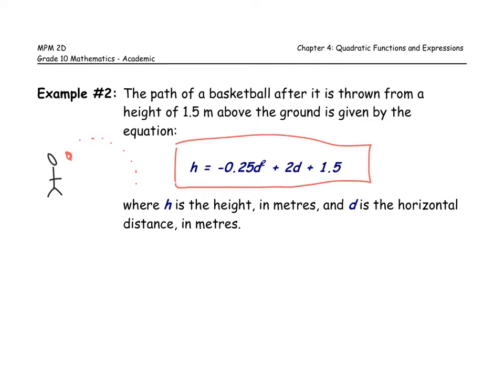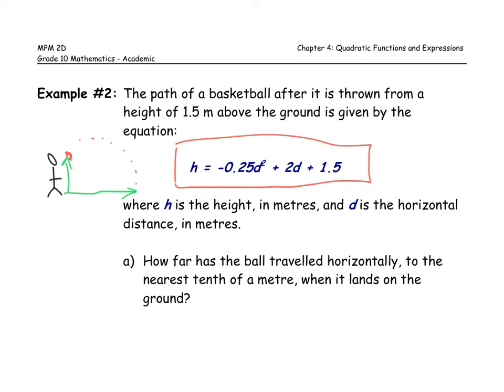Let's see what question they're asking us. They're asking: how far has the ball traveled horizontally to the nearest tenth of a meter when it lands on the ground? So really, what we want here is we want to know what this coordinate is. When it lands on the ground, what is the value of h? Well, the value of h is going to be zero. So we're really just looking for our x-intercepts or our zeros to solve this.